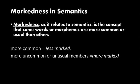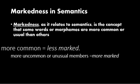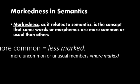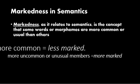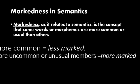Markedness is the concept that some members of a semantic domain are more common or usual than others. The members of a semantic domain that are more common are considered less marked, while the more uncommon or unusual members of a domain are considered more marked.